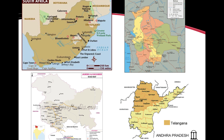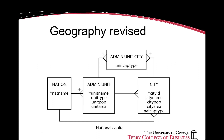Jammu and Kashmir, for instance, has two cities that are the capital of one state, and for Andhra Pradesh and Telangana, one city is the capital of more than one state. Consequently, the geography data model changes so that a nation can have more than one city as its capital, and some cities are the capital for multiple states.